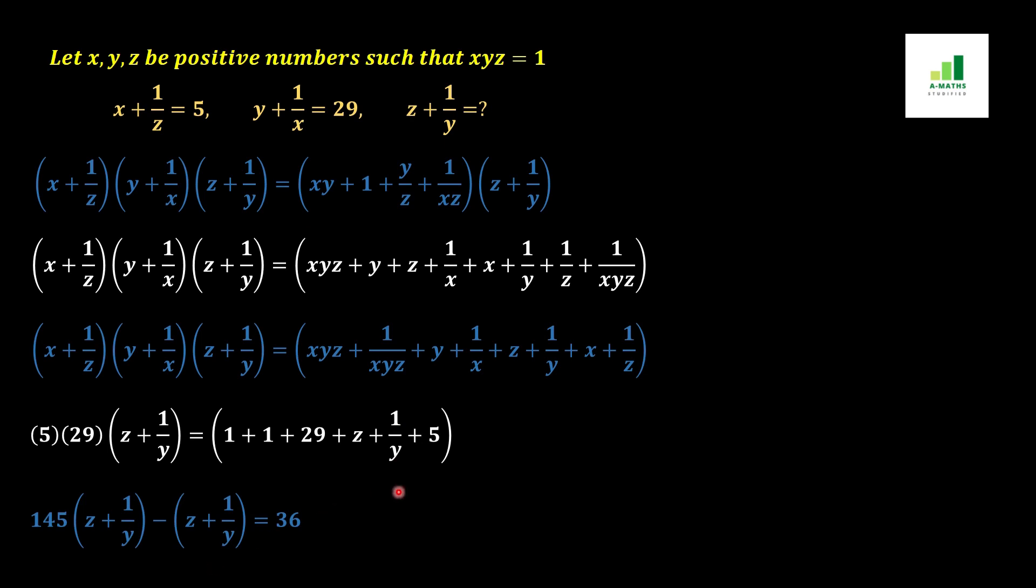In the next step, we will simplify this condition. 5 × 29 = 145. 1 + 1 = 2, 2 + 29 = 31, and 31 + 5 = 36. This z + 1/y is a whole number value. It means that it will be equal to 1. It will go to the other side of the equation and convert into minus (z + 1/y).